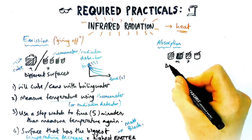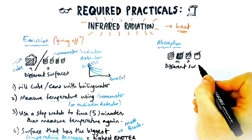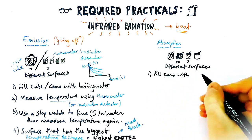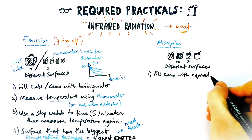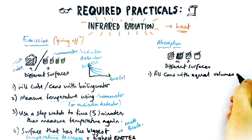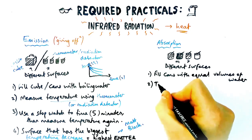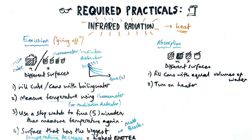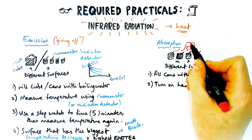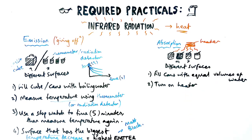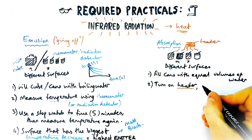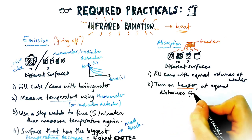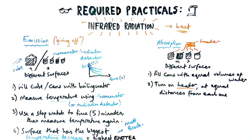Part two of this practical is about absorbing radiation instead of emitting it. It looks similar — you'd have four or more different cans with different surfaces but the same volume. This time you fill them with equal volumes of room temperature or cold water, because they're going to be absorbing radiation. You then have a heat source — that could be a lamp or anything — as long as it's an equal distance away from all four cans to make it a fair comparison. Then you turn on the heater.